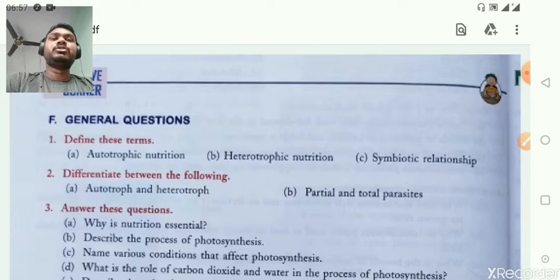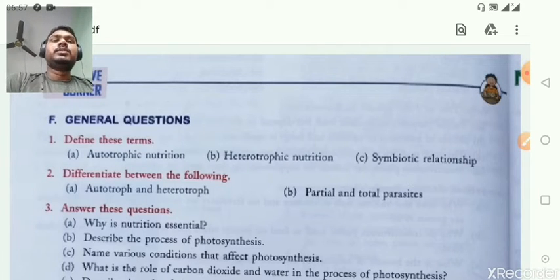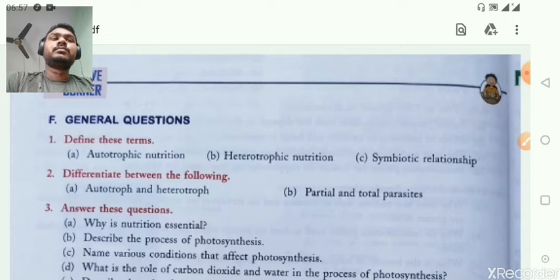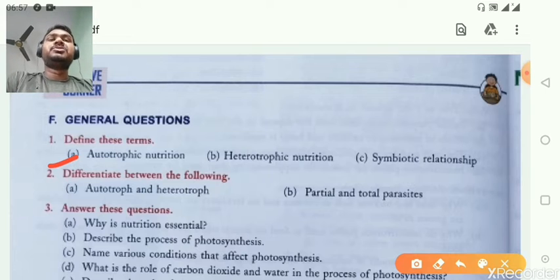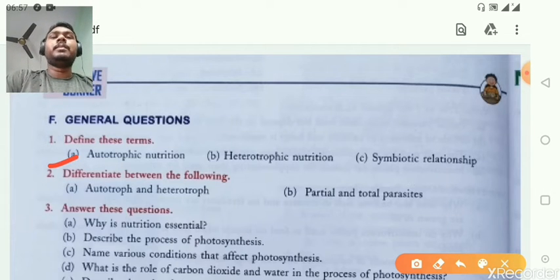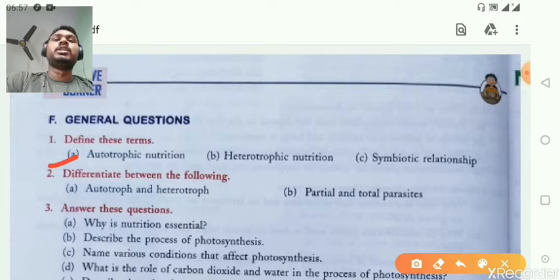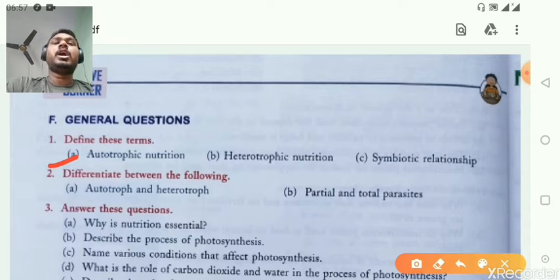This chapter is related to nutrition in plants. The first question asks us to define these terms. First is autotrophic nutrition. The mode of nutrition in which an organism prepares their own food is known as autotrophic nutrition.